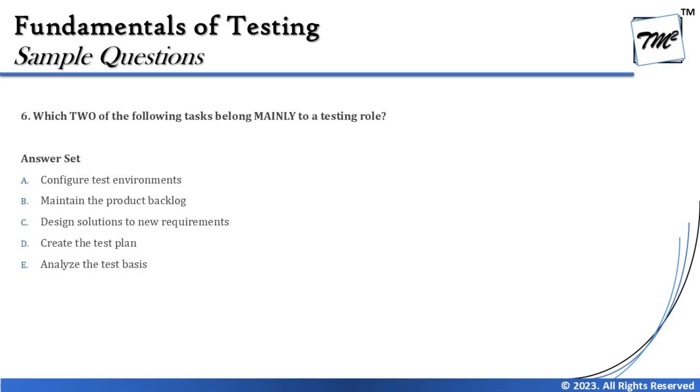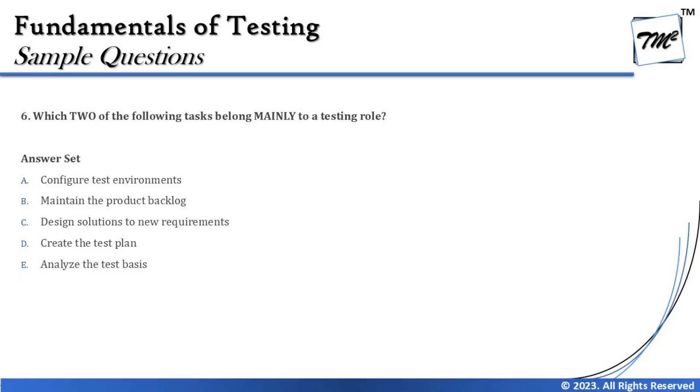Question Number Six asks: 'Which two of the following tasks belong mainly to a testing role?' This is important — some foundation level questions now have five options and require you to select two. Both selected options must be correct to earn the full one mark, so watch carefully for how many options are given and how many you must select.